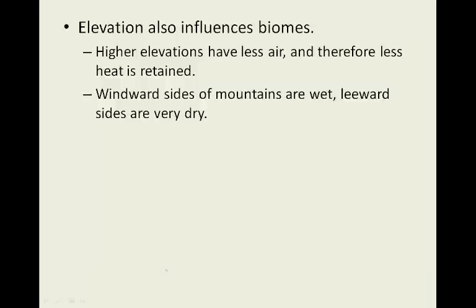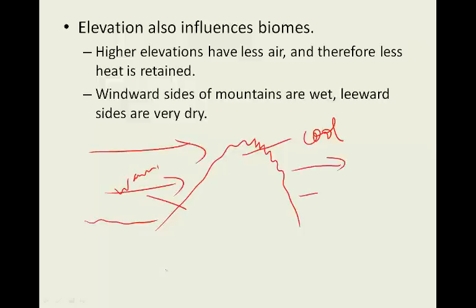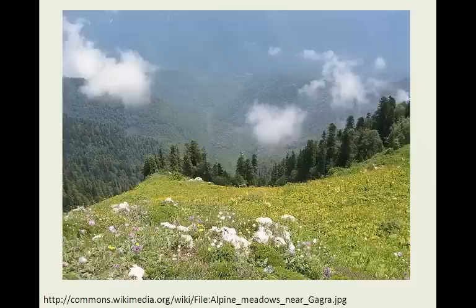Elevation also influences biomes. The higher the elevation above sea level, the less air there is, and therefore less heat is retained — so it's much cooler on top of a mountain than it is down by the seaside. Windward sides of mountains are wet, which would be this side, kind of in the region where we live. The leeward sides, the other side, are very dry — this would be more like the Okanagan.